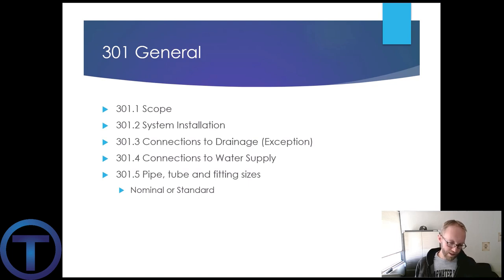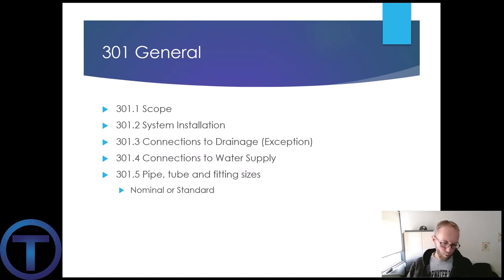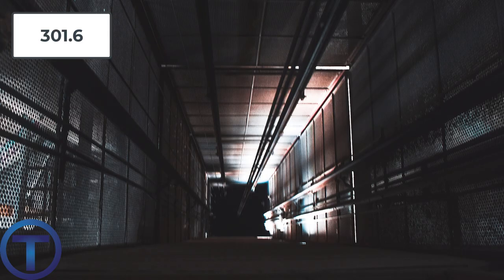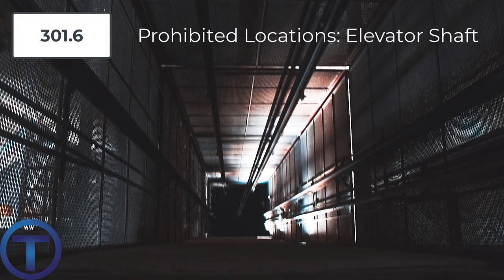301.6 Prohibited locations — there are some places that plumbing should not be installed. One of those is in an elevator shaft. One exception is they will allow a sump pit and sump pump so that if the hydraulics in that elevator should fail, there's a way to get rid of all that oil without having to swim in it, and it would have to go through an indirect waste receptor — catching that oil and separating it instead of dumping it down the regular sanitary sewer drain.